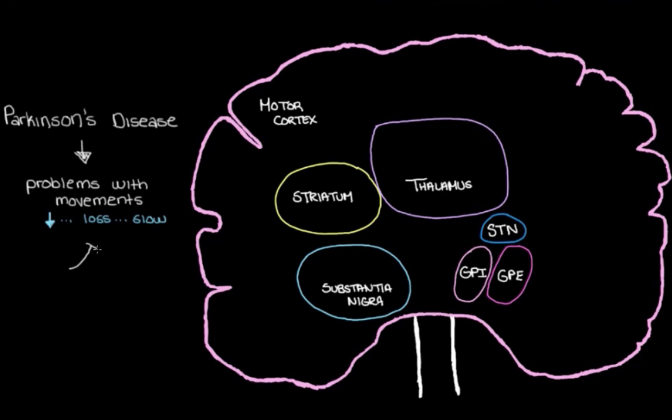And this happens largely because of a loss of dopamine neurons in the brain. But you might be wondering, what is so special about these dopamine neurons? How do they actually cause these problems with movements? That's actually a really great question. So let's have a look at how that all happens.